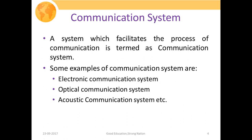A system which actually facilitates the process of communication — meaning the interchange of information — is termed a communication system. Some examples of communication systems are electronic communication systems such as telephone systems or mobile phone communication systems, then optical communication systems using optical fiber, through which we transmit large amounts of information, and acoustic communication systems such as underwater communication systems.